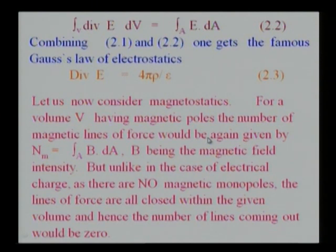Let us now consider magnetostatics. For a volume V having magnetic poles, the number of magnetic lines of force would be given by integral over A of B dot dA, B being the magnetic field intensity. But the most important thing that comes here is, unlike in the case of electrical charge, as there are no magnetic monopoles, magnetic poles occur in pairs.